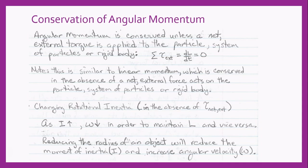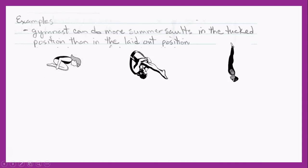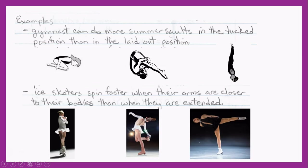Let's look at two practical examples involving conservation of angular momentum. In our first example, we have a gymnast doing a somersault. The mass doesn't change, but notice how the distance or radius from the axis of rotation is smallest in the tucked position, larger in the pike position, and longest in the full layout position. So the rotational speed is quickest in the tucked position and slowest in the laid-out position — that's why gymnasts can do more somersaults when tucked.